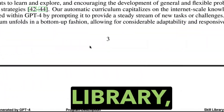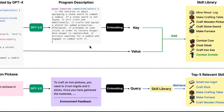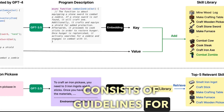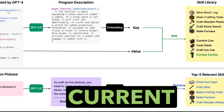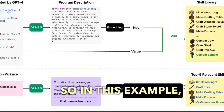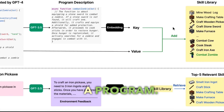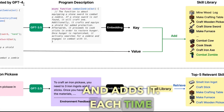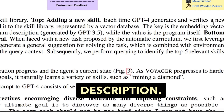For the skill library, each skill is represented by code — for example, an async function. The input to GPT-4 consists of guidelines for code generation, control primitive APIs, environmental feedback, agent current state, and chain-of-thought prompting. GPT-4 generates a program, which then uses GPT-3.5 to verify and add to the skill library each time a new skill is generated. The skill library is represented by a vector database where the key is the embedding vector of the program description and the value is the program itself.